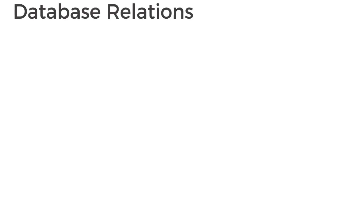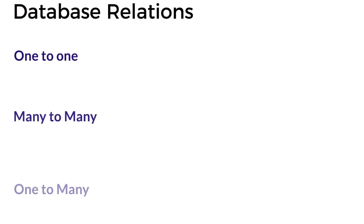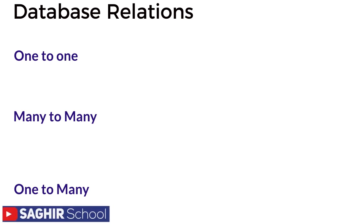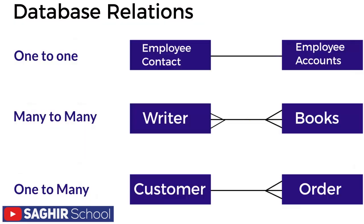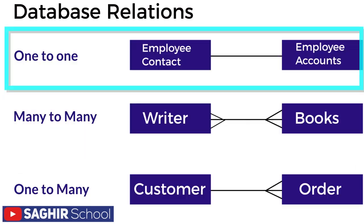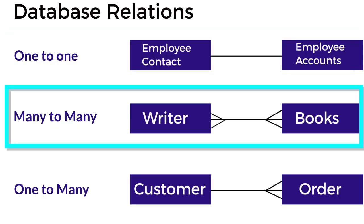Database relations are mainly of three types: one-to-one, many-to-many, and one-to-many. The crow's foot shape represents 'many' in a relationship. In this example, employee contact and employee account are both plain-sided, so one employee contact can have one employee account. In many-to-many, both sides are shown with crow's foot shapes — many writers can write many books.